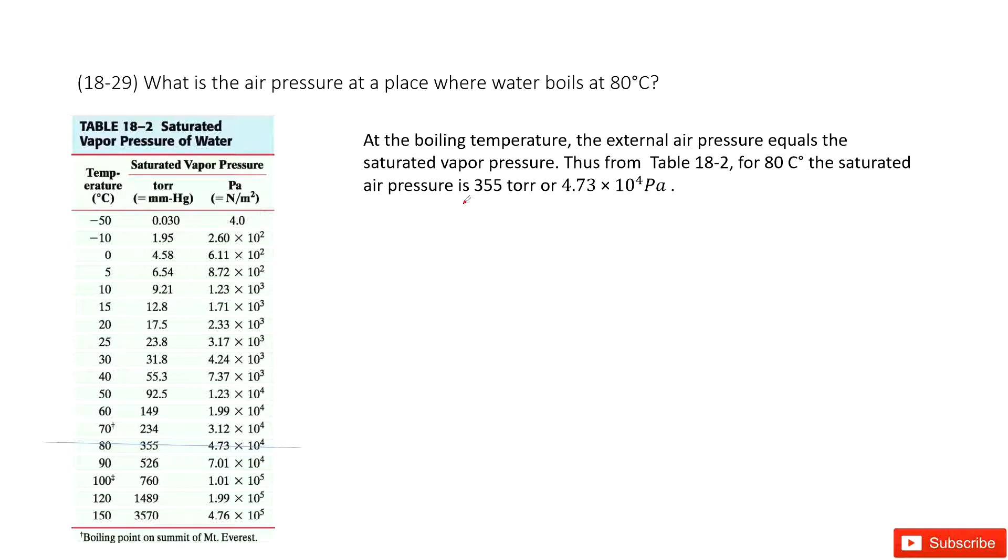So there we consider the water vapor. It tells us we need to find the air pressure at places where the water boils at 80 centigrade. So the first quantity given is 80 centigrade. The next one, water boils.